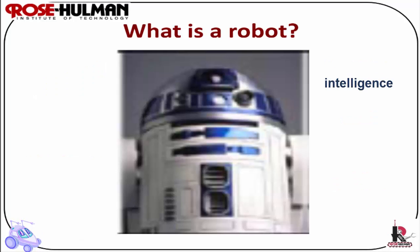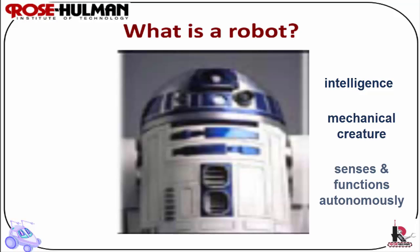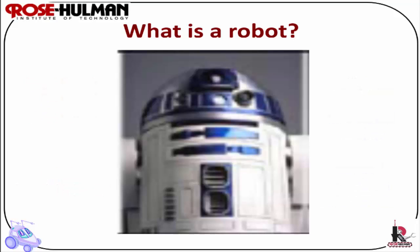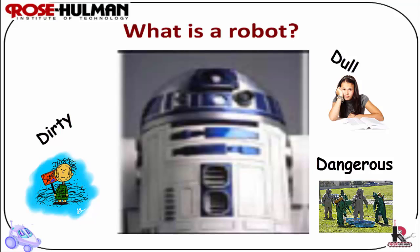One definition we'll use in this class is that an intelligent robot is a mechanical creature which can function autonomously in the world. The word robot became popular because of Karel Čapek's play Rossum's Universal Robots, performed around 1921 in Prague. The word robot is derived from the Czech word 'robota,' meaning menial laborer. Industrial robots were chosen to do tasks humans didn't want — dirty, dangerous, or dull — the 3Ds — tasks that robots are ideal for.